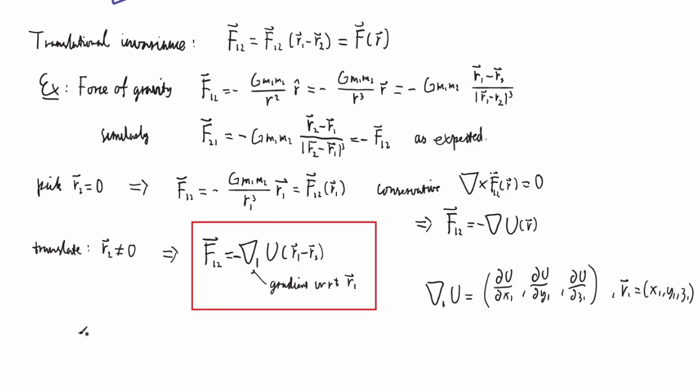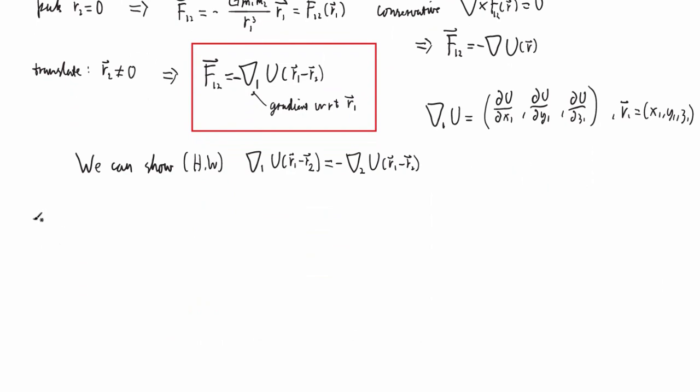And we can also show, and this is going to be on the homework, that if I take the gradient with respect to R1 of U which depends on R1 minus R2, that's minus the gradient with respect to R2 of the same function. So because of that, we obtain our final result that if we have that the curl of the force F12, which depends on R1 minus R2, is zero, then we can write F12 as minus gradient of U and F21 as minus gradient of U.